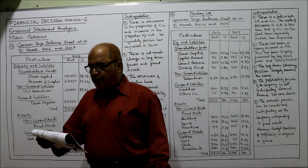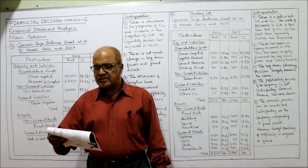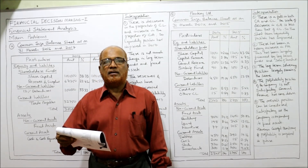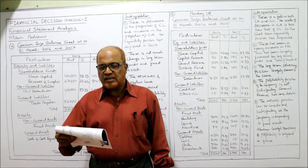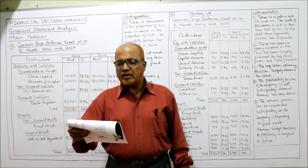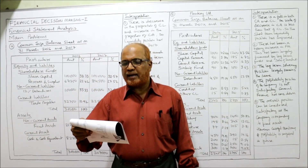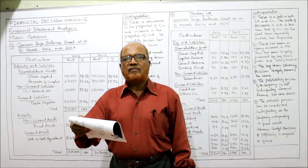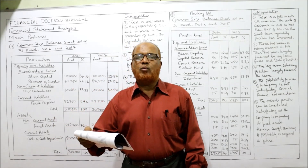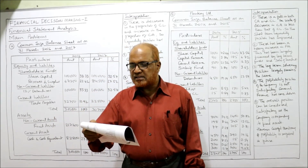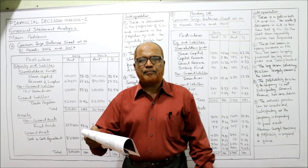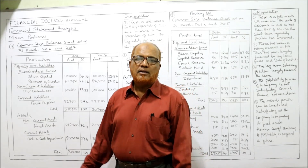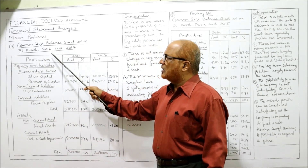Now see problem number four: prepare a common size statement and interpret the result. A common size balance sheet is given as on 31st March 2016 and 2017 — last year 2016, current year 2017. The particulars include equity and liabilities: shareholders' fund with share capital and reserves and surplus, non-current liabilities with 12% debentures, and current liabilities with only trade payable. The total of the balance sheet is 3 lakh last year and 3 lakh 7000 current year. On the asset side, non-current assets are fixed assets and current assets consist only of cash and cash equivalents.